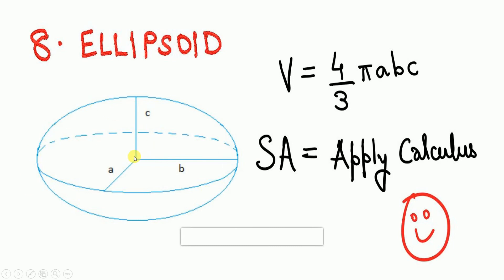The ellipsoid resembles a rugby ball with three semi-axes a, b, and c. Volume = (4/3)πabc. There is no simple closed-form formula for its surface area — it is recommended to use calculus, by taking a surface element and integrating to find the outer surface area.